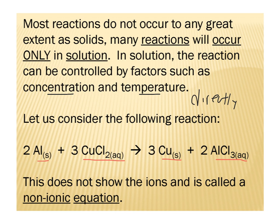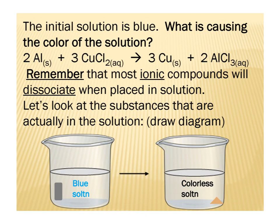This equation is the same as the ones that we've done in previous courses, where we just write the equation with the reactants and products, we balance it, and we include their states of matter. If we look at this reaction in real life, we'll notice that the initial reactant is a blue solution with a silverish metal. The blue solution is the presence of the copper ion.